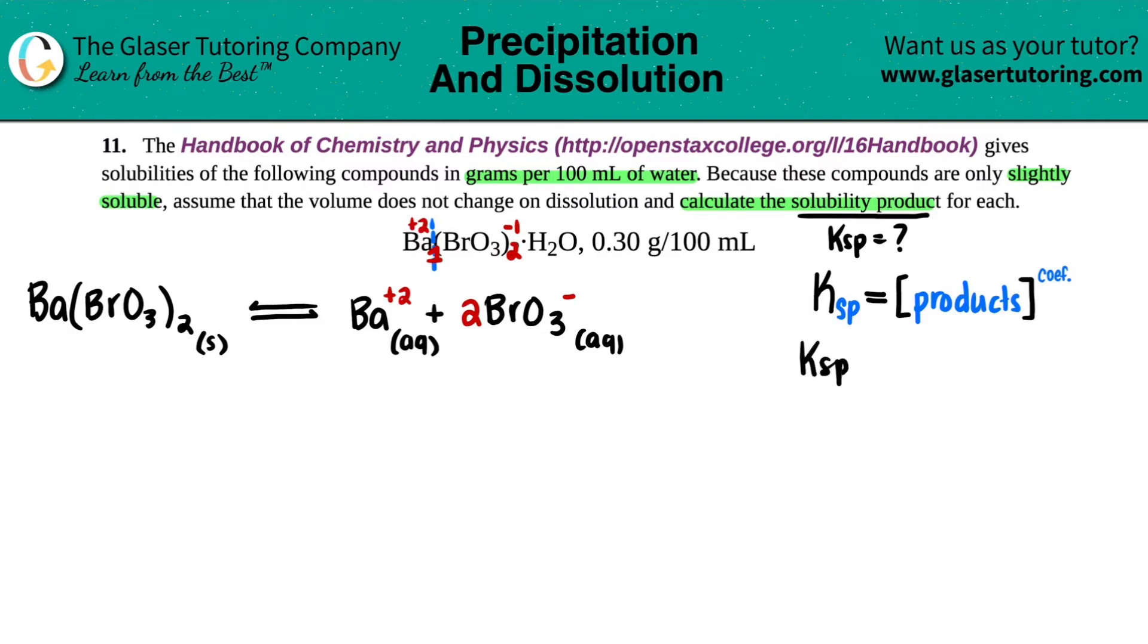So Ksp equals the concentration of the Ba2+ and the BrO3-. So Ba2+ times BrO3-. And now just be careful with Ksp. You really got to check for those coefficients. There was no coefficient in front of the barium, that means there was one of them. But the bromate, there was two. So I have to raise this to the second power. Whatever the bromate concentration is, it has to be raised to the two because that's the coefficient.